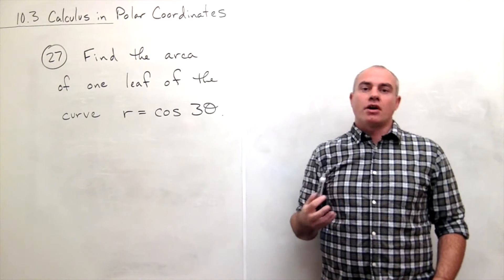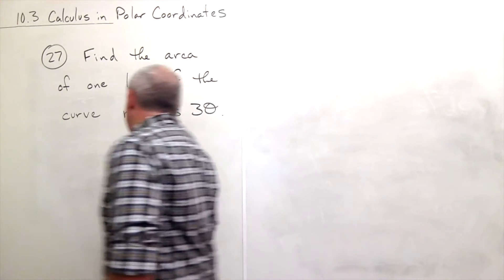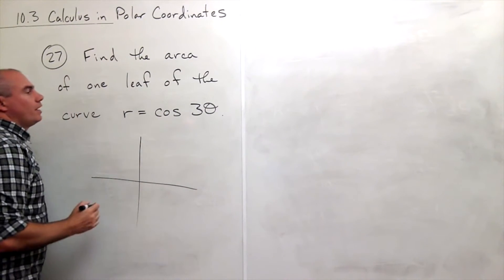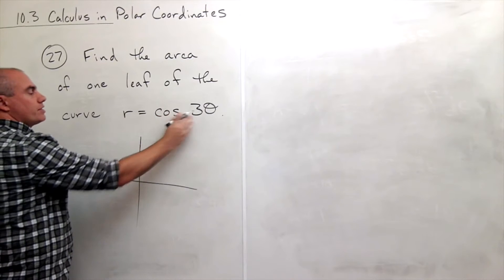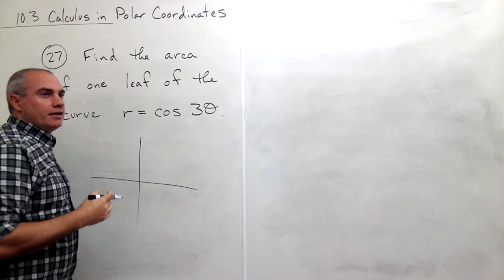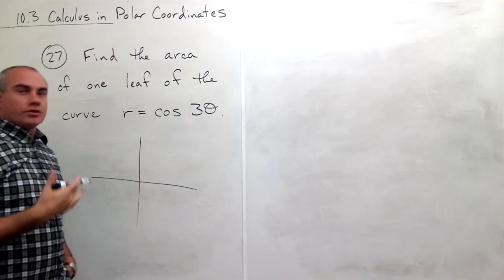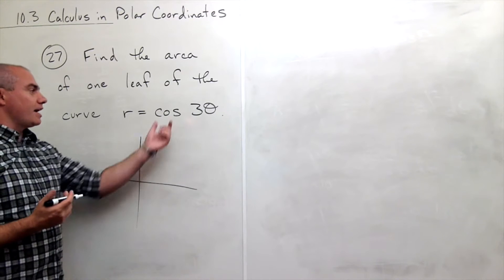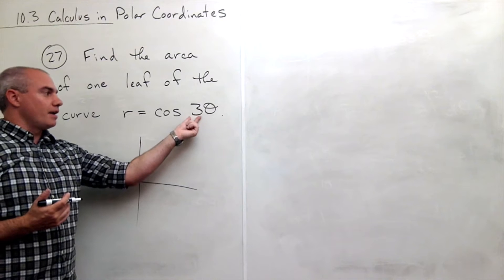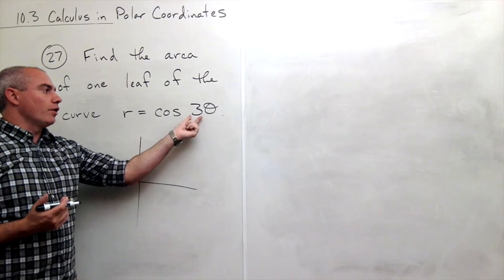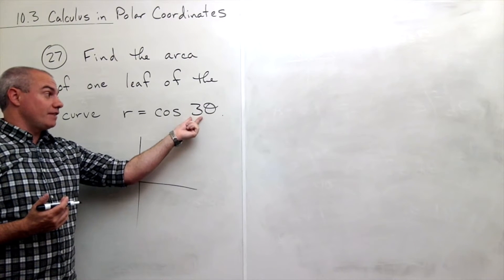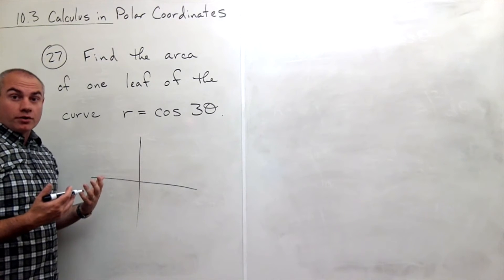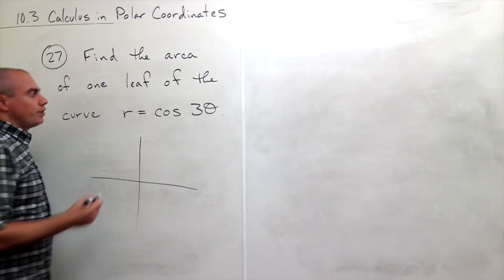So to start out here let's just draw this curve. To draw this polar curve I know that r equals cosine of three theta is what we call a rose shape in polar coordinates and because it has an odd number next to the theta we know it has that number of leaves.